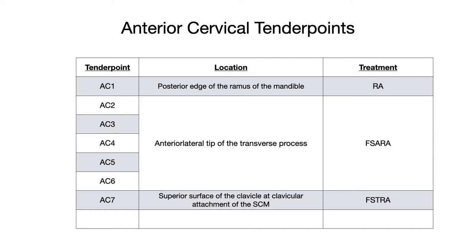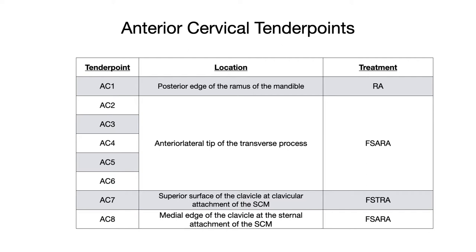The last anterior cervical tender point is AC8. Its location is on the medial edge of the clavicle, at the sternal attachment of the SCM. The treatment for this counter strain tender point is F-CERA: flexion, side bending away, rotation away. Note that AC7 and AC8 are where the attachments of the sternocleidomastoid are — AC7 is the clavicular attachment and AC8 is the sternal attachment, so definitely don't mix those up.